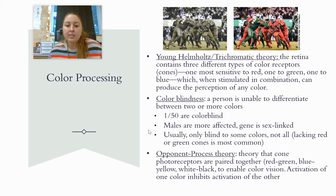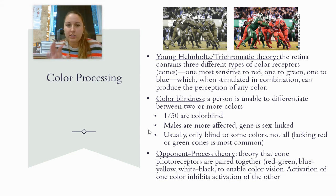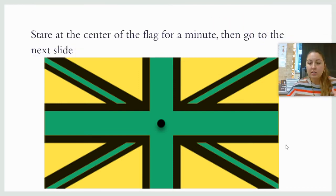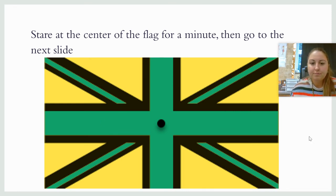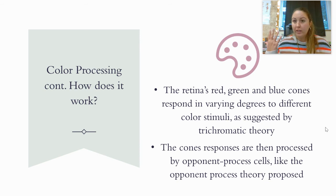Then there's the opponent process theory, which proposes that cone photoreceptors are paired together — red and green, blue and yellow, and white and black — and this allows us to see color vision. When we stare at red, for example, according to this theory the green is inhibited, and so we know we're seeing red because green is being inhibited. Opponent process theory helps explain afterimages — pause the video here, look at the dot for a minute, and then go to the next slide.